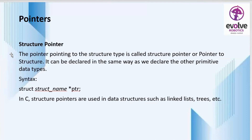The next type is structure pointers. A pointer that points to a structure type is called a structure pointer, or a pointer to a structure. It can be declared in the same way as other primitive data types. We use the struct keyword, followed by the structure name, the variable name, and the star ptr pointer variable. In C, structure pointers are used in data structures such as linked lists, trees, etc.